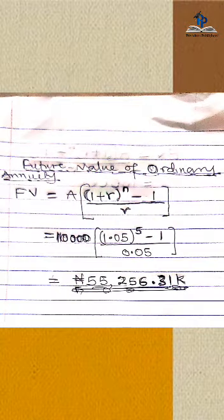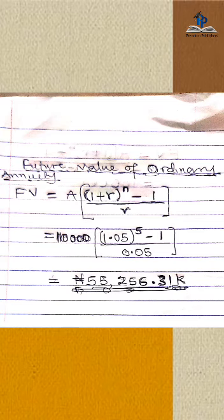Here's a solution. Future value of ordinary annuity: FV, which represents future value, equals A, which represents annuity, in brackets: (1 + R) power N, minus 1, divided by R, close bracket.